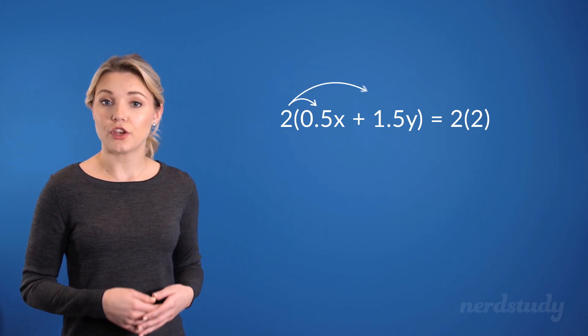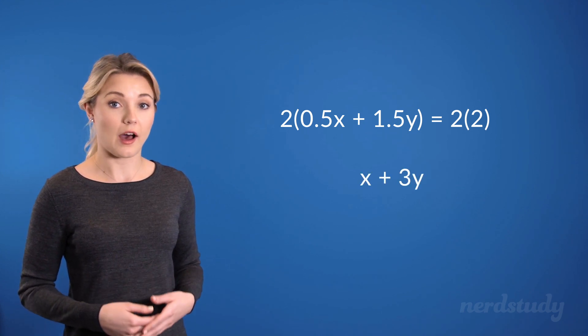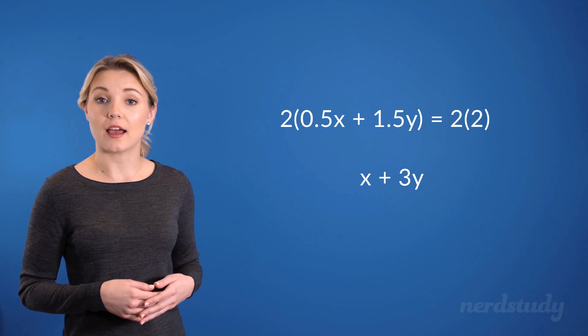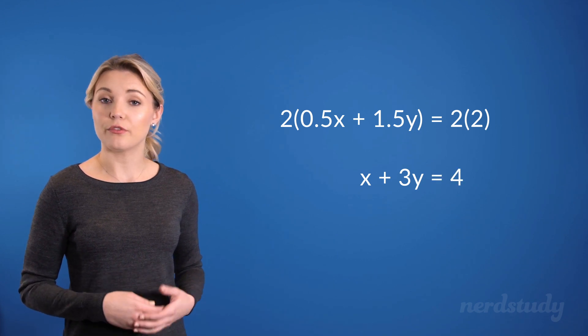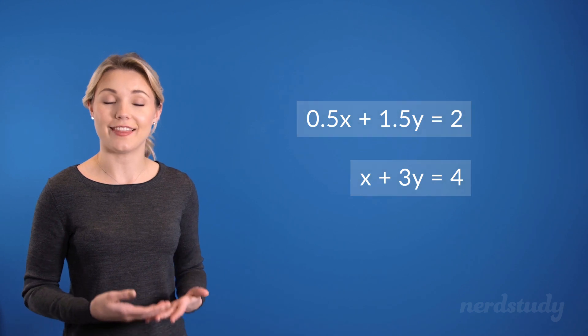Distributing the 2 to the left side gives us x plus 3y, and 2 times the right side would equal 4. Awesome! So there's the same equation in the standard form.